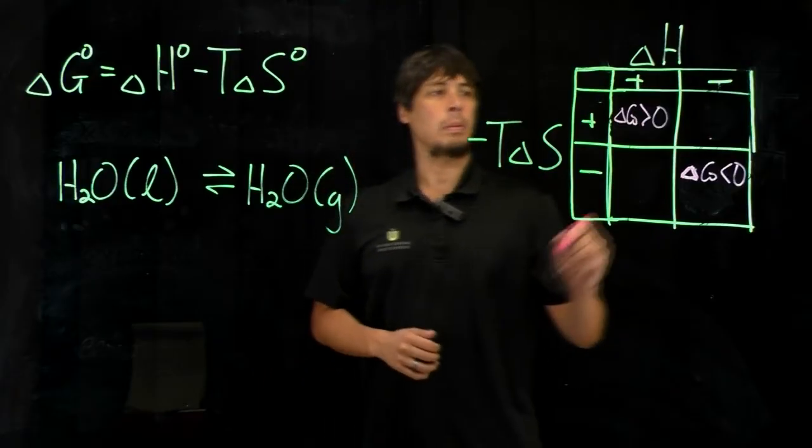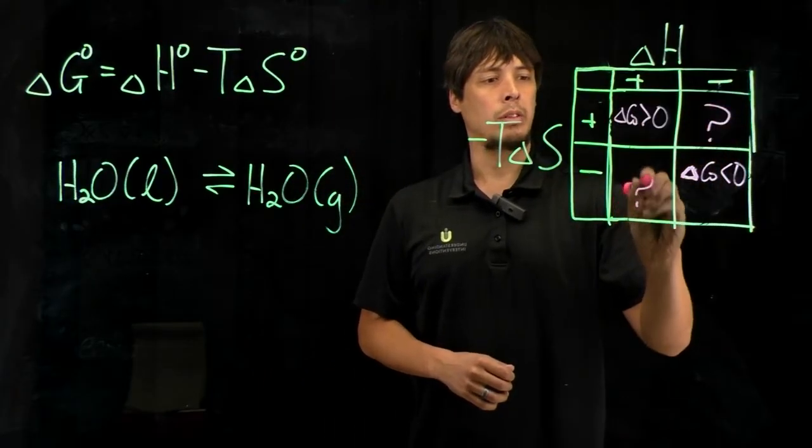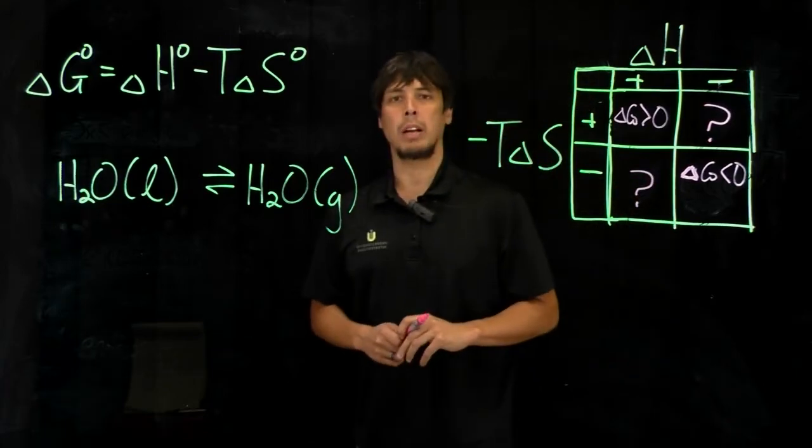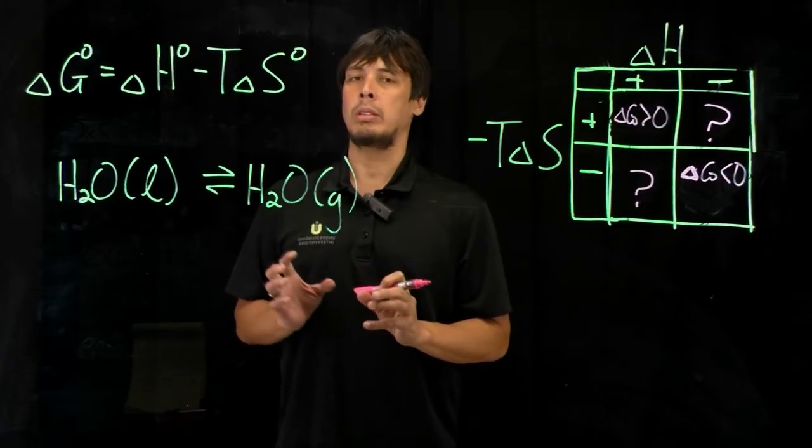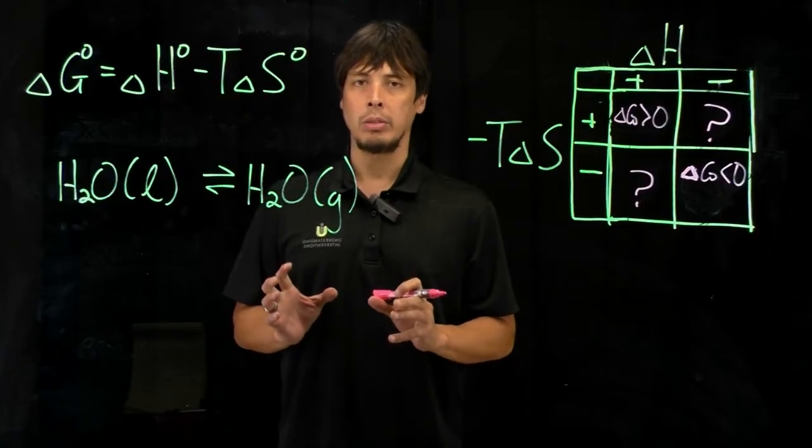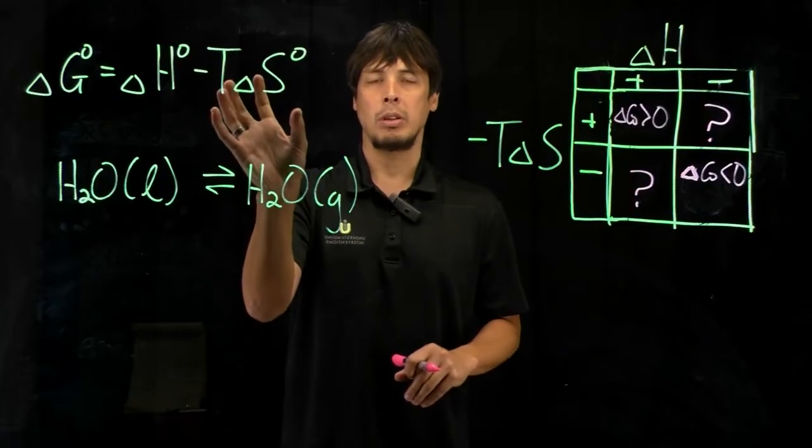So what happens if we're in a gray area, where one of the terms is negative and one of the terms is positive? What we need to know are the relative values between the enthalpic term and the entropic term.